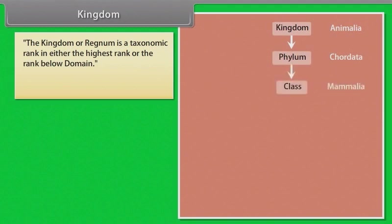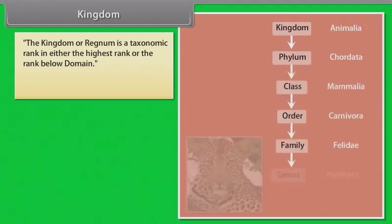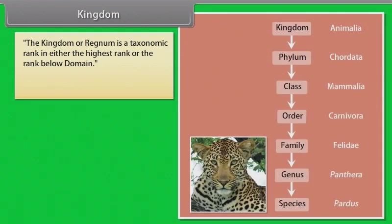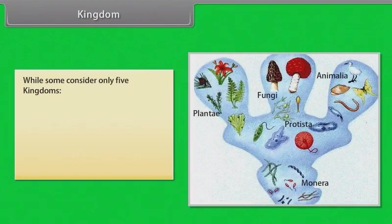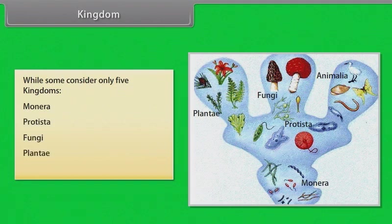The kingdom, or regnum, is a taxonomic rank — either the highest rank or the rank below domain. Each kingdom is divided into smaller groups called phyla. A system of six kingdoms includes Animalia, Plantae, Fungi, Protista, Archaea, and Bacteria. Some consider only five kingdoms: Monera, Protista, Fungi, Plantae, and Animalia.